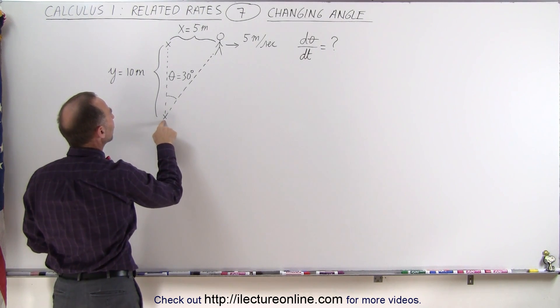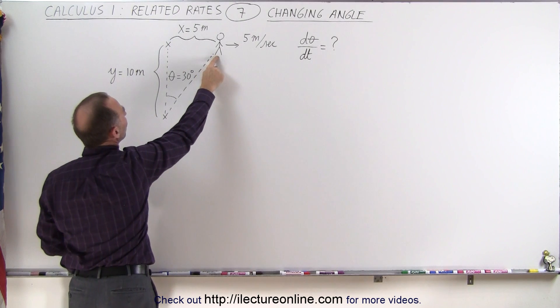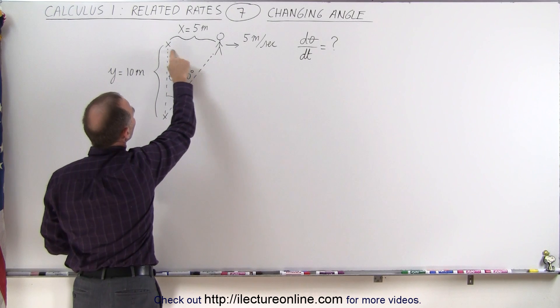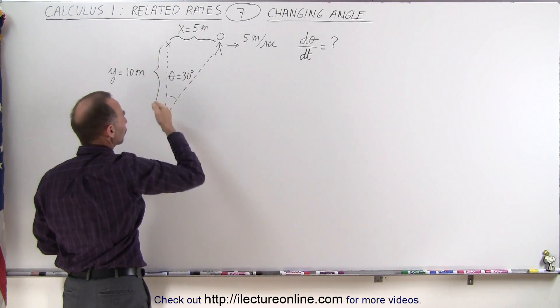We have a reference point down here, a second reference point up here, and a person walking to the right at 5 meters per second.